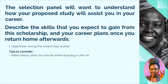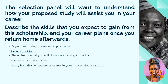Tips to consider: state clearly what you will do while studying in the UK — emphasis on the word 'clearly.' Be as clear as possible when writing out what you're going to do. You could consider your performance in your MSc, and you could also consider studying how the UK system operates in your chosen field — whether that's the UK health system, environment system, education system, or whatever you're going to study. You could also point out some UK policies that you've read up on online that you're looking to explore.